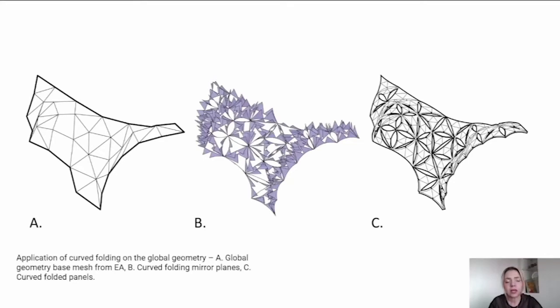So once we had the approximated global geometry defined, then we applied the mathematical modeling of the component geometry on the global geometry itself. And we generated the final global configuration of the curved folded components.